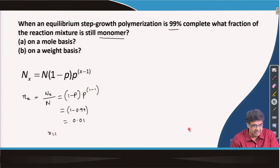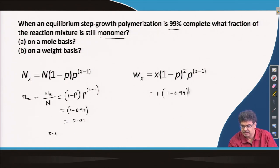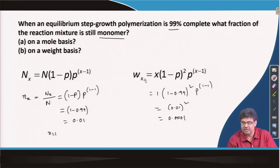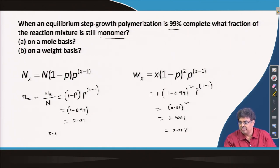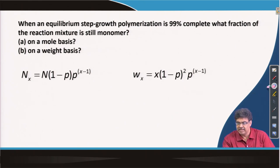For weight fraction, we apply the weight fraction expression with x = 1: (1 − 0.99)² = 0.0001, so the weight fraction of monomer is about 0.01%. This means by weight, the monomer has only about 0.01% in the reaction mixture. So, by number, lower molecular weight species are present in higher numbers, but their weight fraction is much smaller.